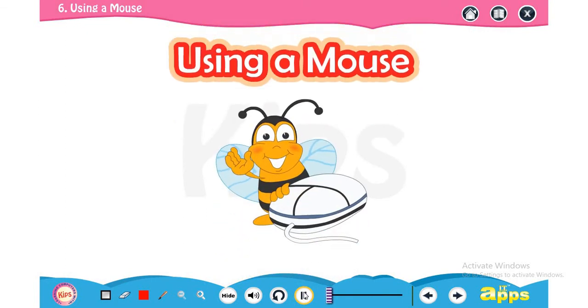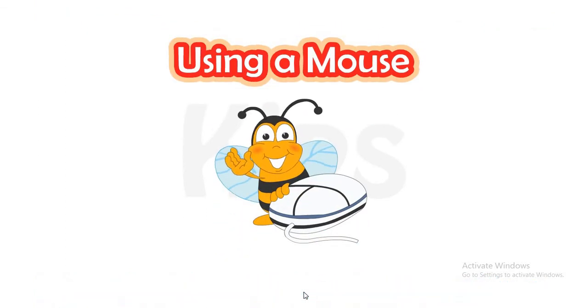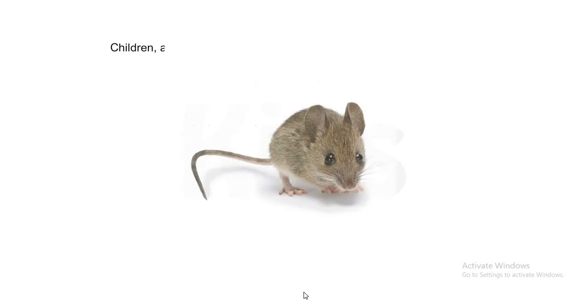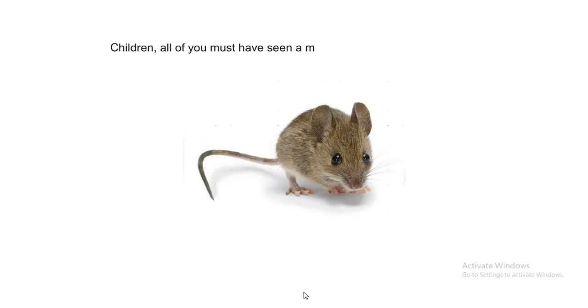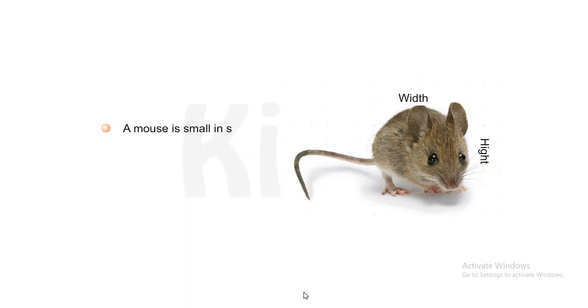Let us learn how to use a mouse. Children, all of you must have seen a mouse in and around your house. Let's know about it. A mouse is small in size. It has a tail. It runs very fast.